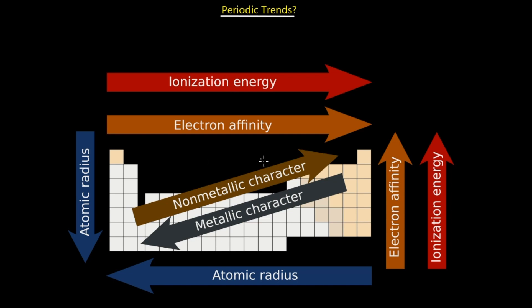We're going to take a look at four major trends on the periodic table, which include ionization energy, electron affinity, metallic character, and atomic radius. These will give you an idea of how the periodic table is specifically structured. Let's take a look at each one of these individually.